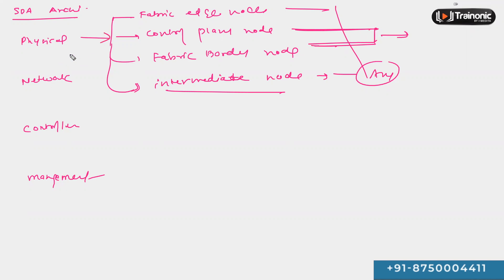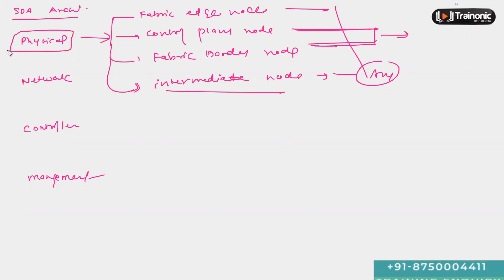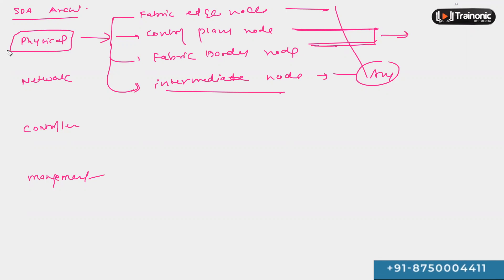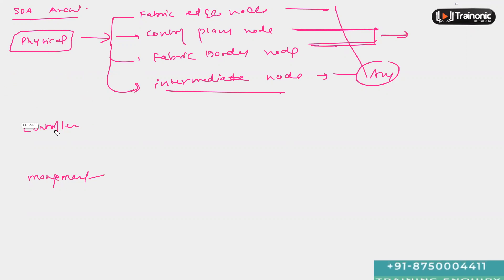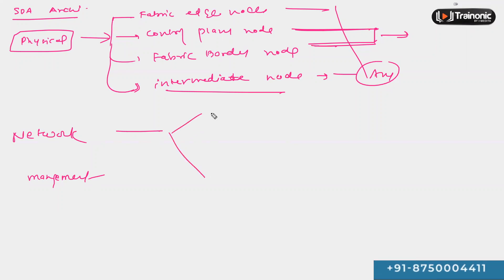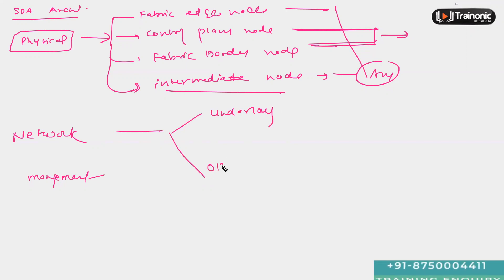The physical layer is concerned with all the physical devices we are going to use in our infrastructure, and all those devices are going to have different roles. The network layer in the SDA is going to consist of two things: one, we have underlay, and one, we have overlay.